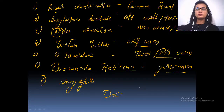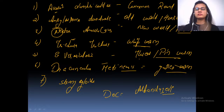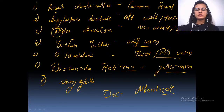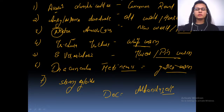The drug of choice for all nematodes is albendazole. Exceptions: for trematodes and cestodes the drug of choice was praziquantel, with the exception of Echinococcus granulosus within cestodes where albendazole is used.